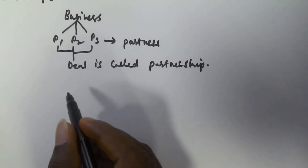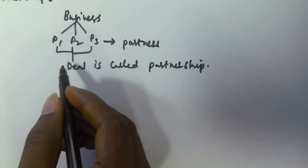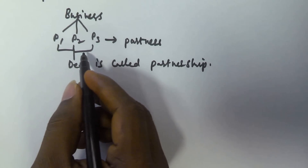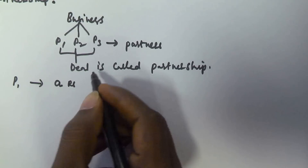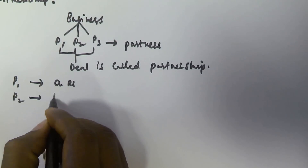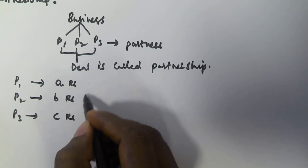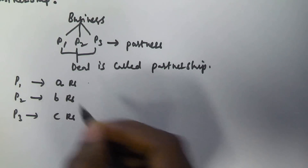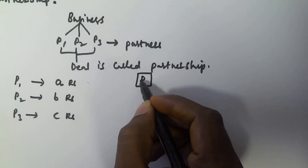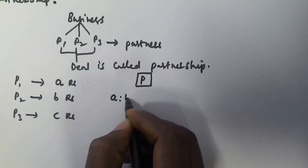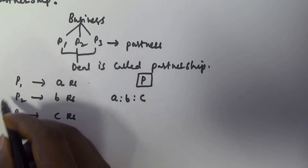If the partners invest an amount for the same duration, then the gain or loss is distributed among the partners in the ratio of their investment. For example, person P1 invested amount A rupees, person P2 invested B rupees, and person P3 invested C rupees. If they got profit P, this profit must be divided in the ratio A : B : C, because all three invested for the same period.